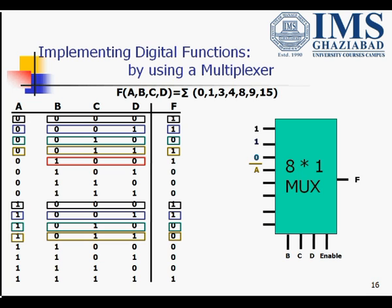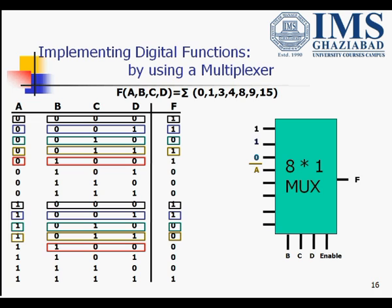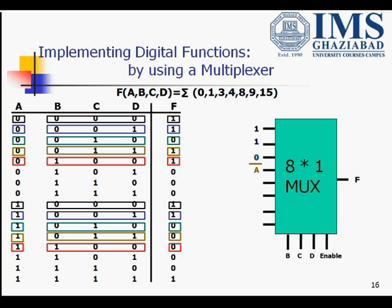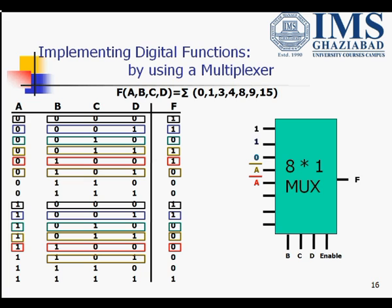In the next combination, b,c,d = 1,0,0: when a=0 the function value is 1, and when a=1 the function value is 0. The function value is the reverse of a, so this input also becomes ā. In the next case, b,c,d = 1,0,1: when a=0 the function is 0, and when a=1 the function is 0, so our next input is 0.